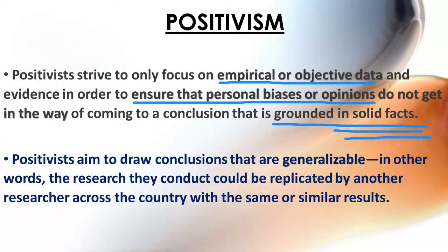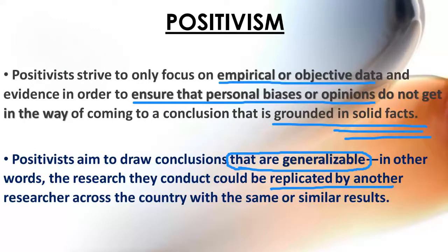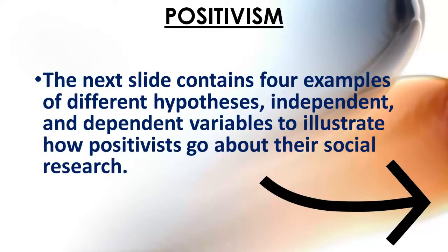Positivists also want conclusions that are very generalizable — meaning if they make a conclusion, they want to make sure it holds for any other society as well. They want their research to be replicable: if another sociologist replicates the same study, they would get the same results. On the next few slides, we'll look at four different examples of hypotheses with independent and dependent variables to illustrate how a positivist sociologist would go about their research.